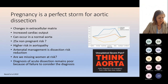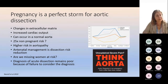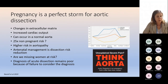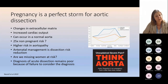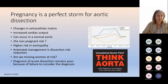Pregnancy is a perfect storm for aortic dissection. The haemodynamic changes, together with the change in the extracellular matrix, significantly increase the risk of aortic dissection — some studies suggest up to 25 times the non-pregnant risk. Although higher risk in aortopathy, it can also occur in a normal aorta. All antenatal management in this situation is aimed at dissection risk reduction. A wider question is whether we are missing women at risk — picking up women with the right family history at booking or pre-pregnancy — and whether we're ensuring correct pre-pregnancy counselling. Diagnosis of acute dissection remains very poor because of failure to consider it. Hence: think aorta.